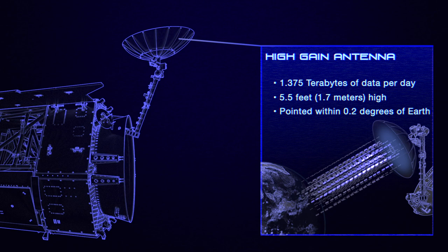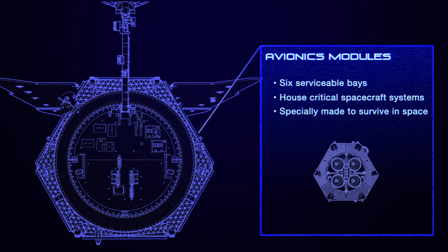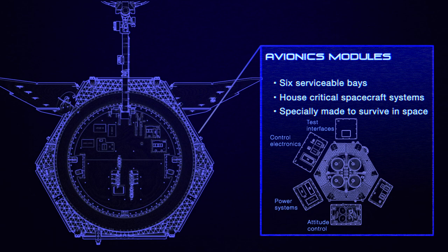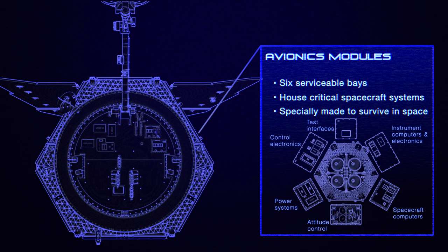Roman's critical systems, such as power and data handling, are located in six modules at the spacecraft's rear. These include six rotating reaction wheels that control where the spacecraft points, nearly one ton of propellant for larger movements, and a 10-terabyte data recorder.